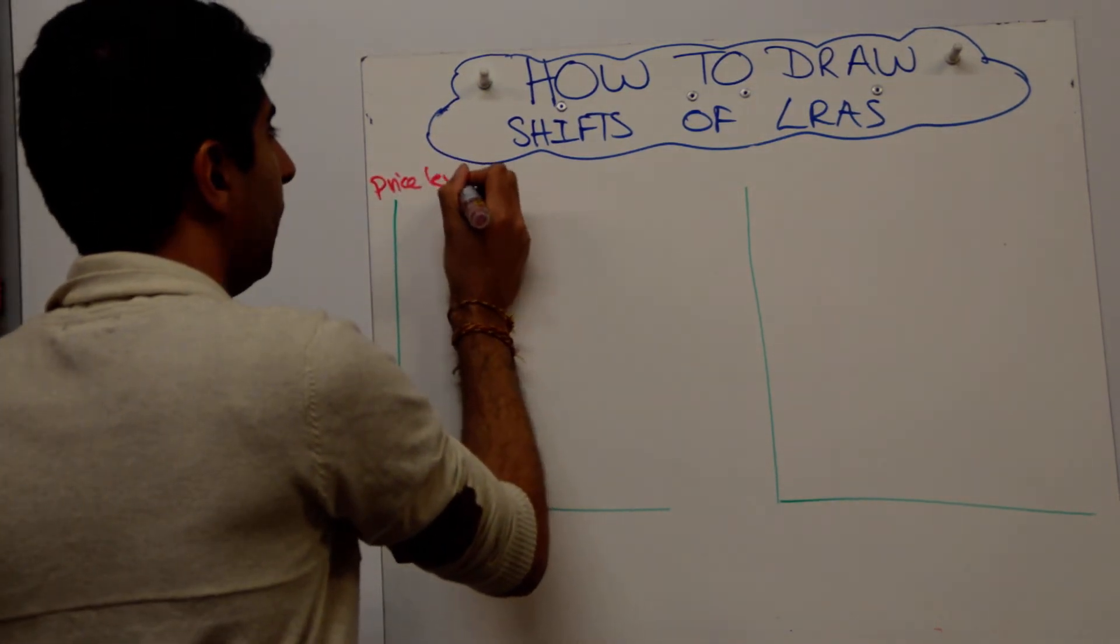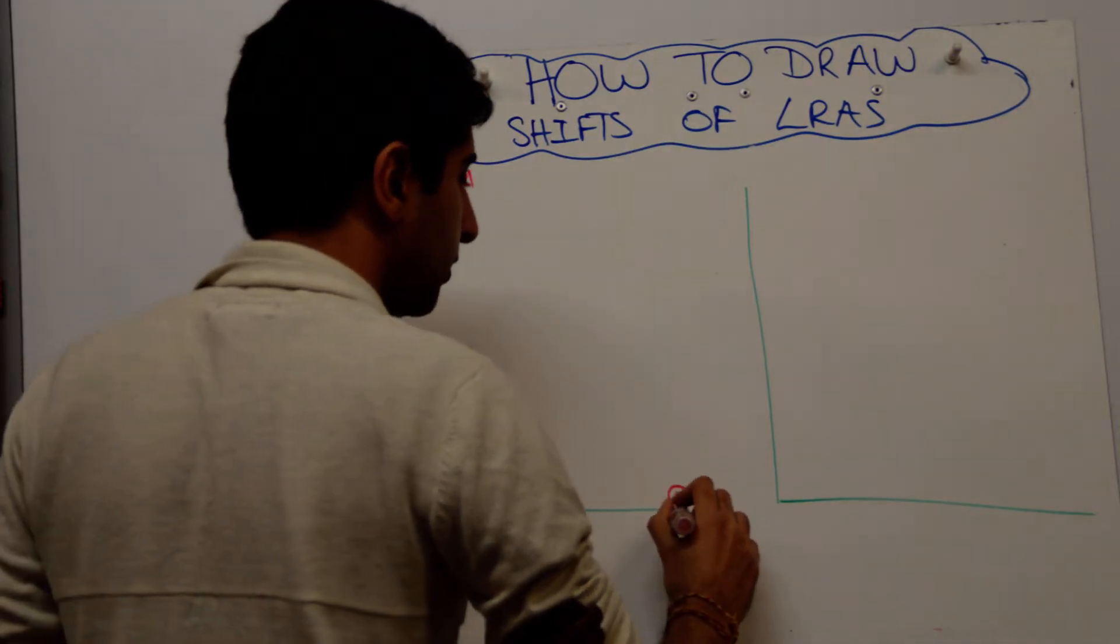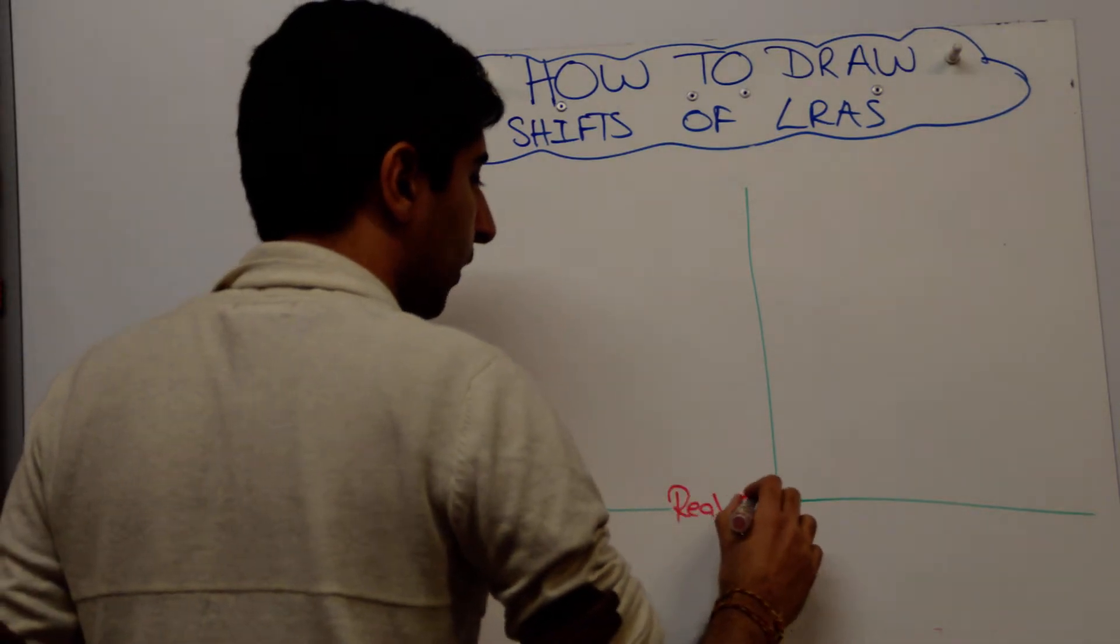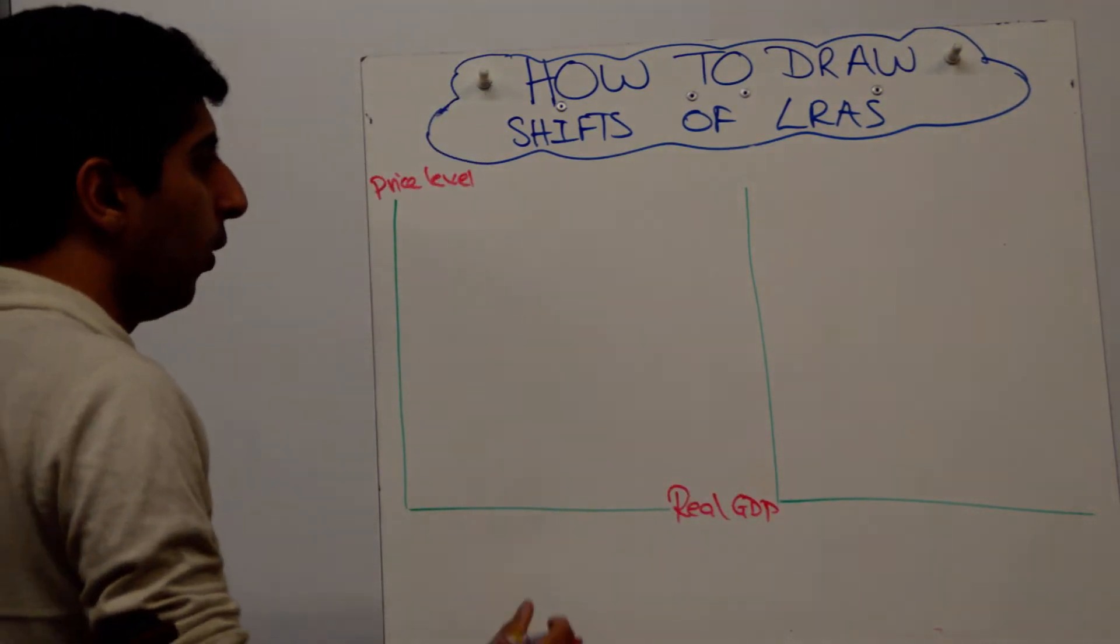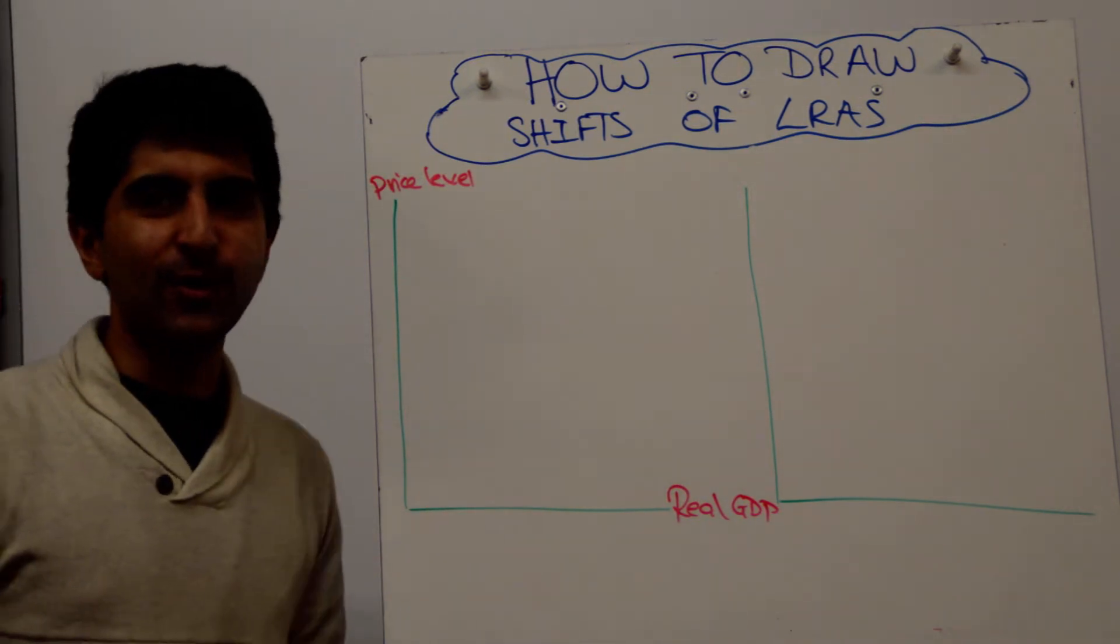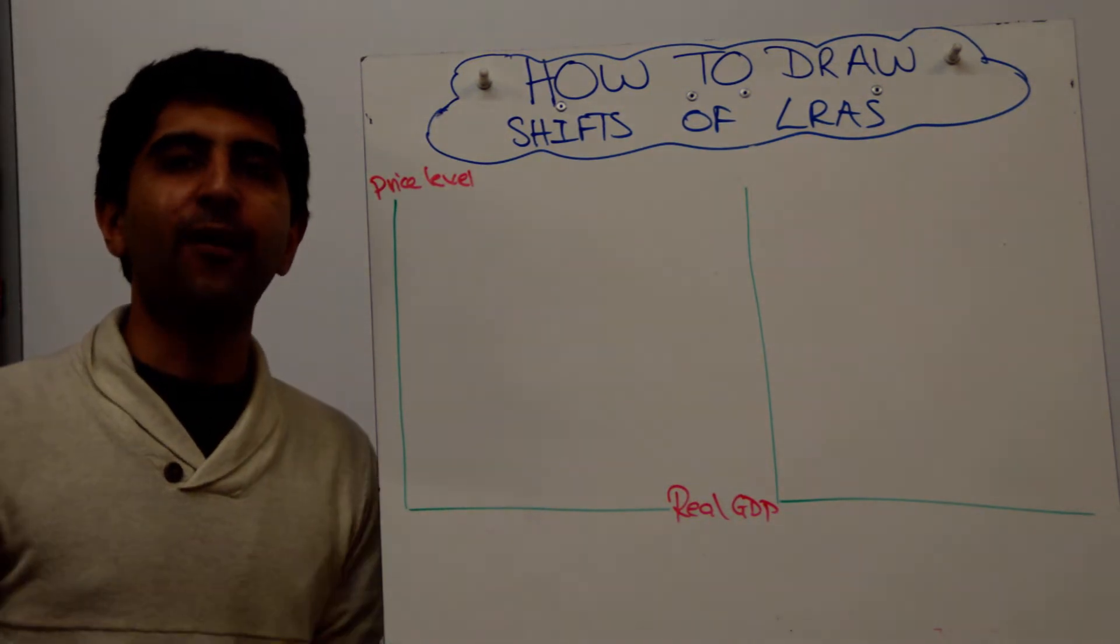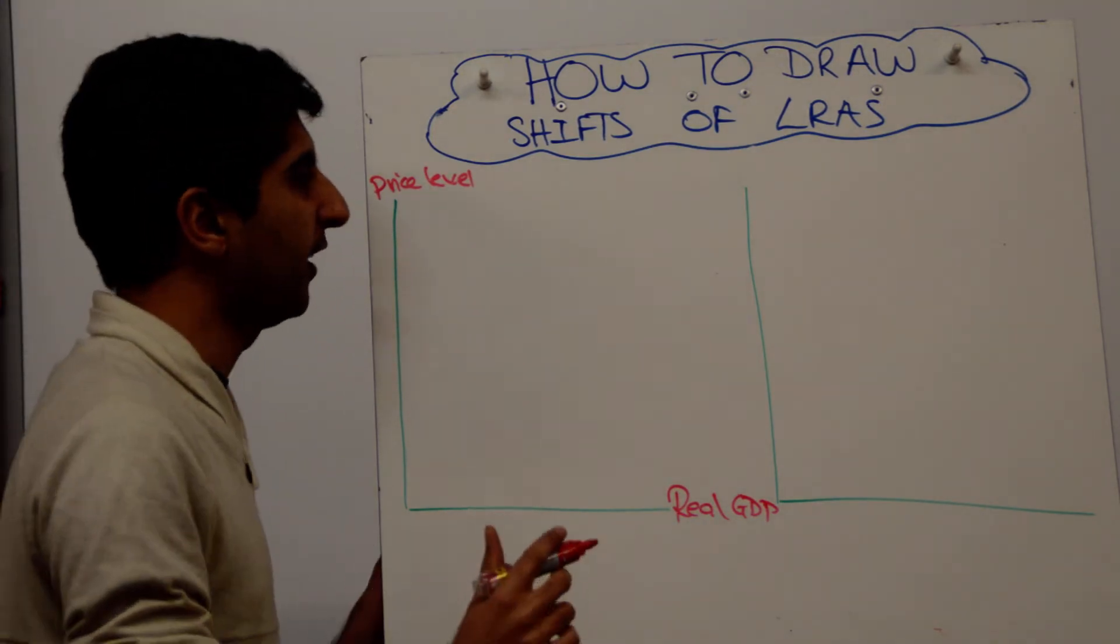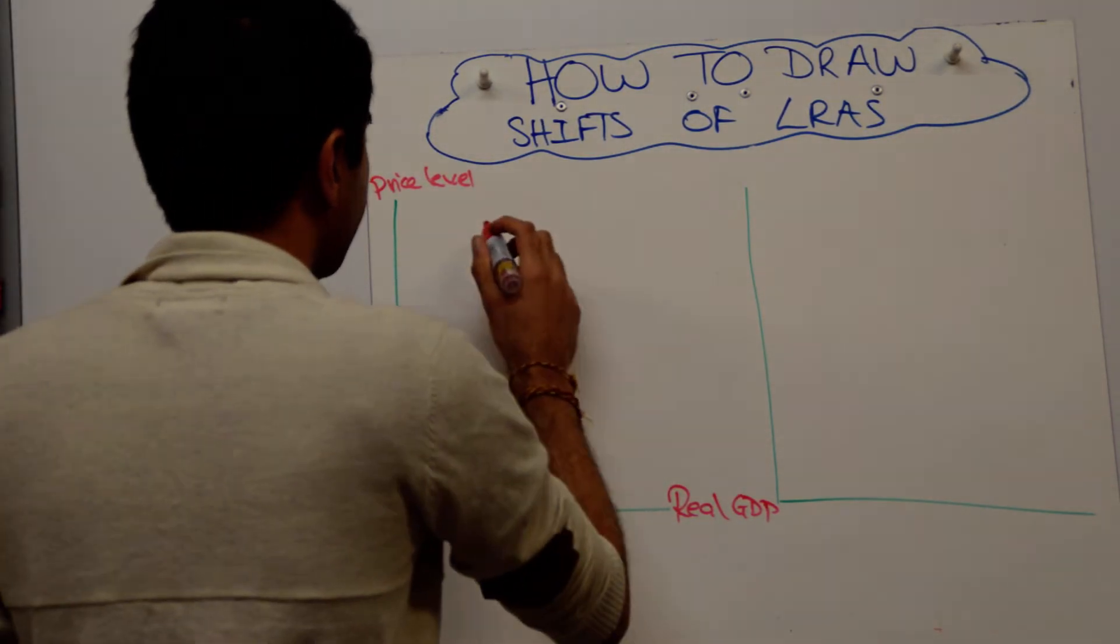So it's price level on the y-axis and real GDP on the x-axis. All I would recommend you do is just draw AD and LRAS. Just keep it really simple. Don't overdo things, is my philosophy.